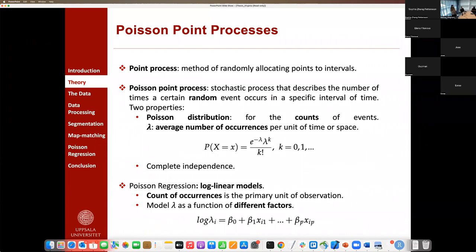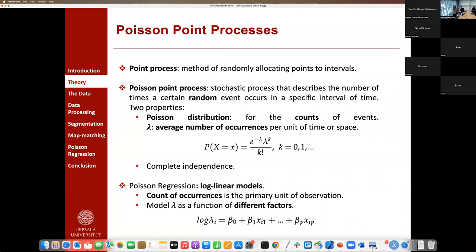Now we will start with some theoretical concepts. A point process is some method of randomly allocating points to intervals in the real line or in the plane. For a point process to be a Poisson point process, it has to have these two properties. A Poisson point process is a stochastic process that describes the number of times certain random events occur. For example, accidents on the road are modeled as Poisson point processes.